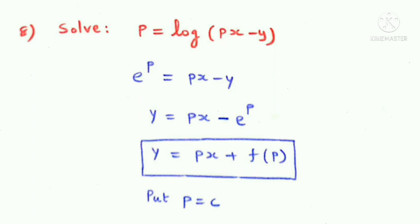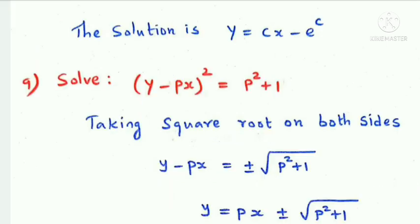This is in Clairant's form, y = px + f(p). Putting p equal to c and substituting, the solution is y = cx - e^c.